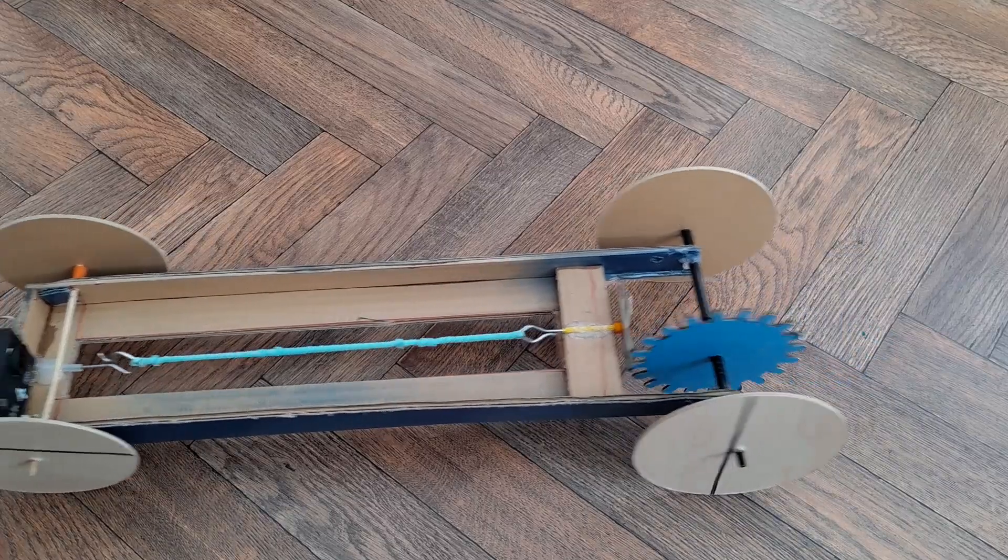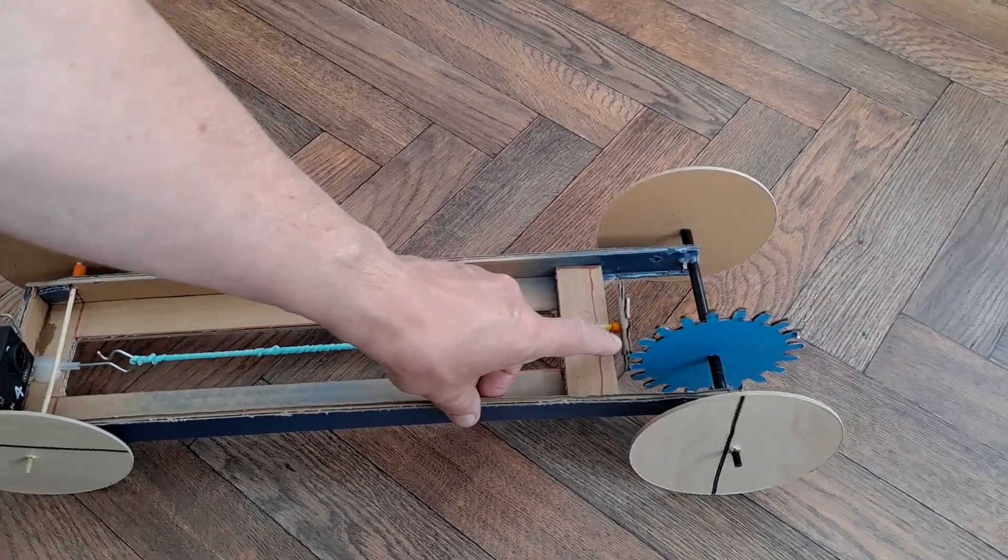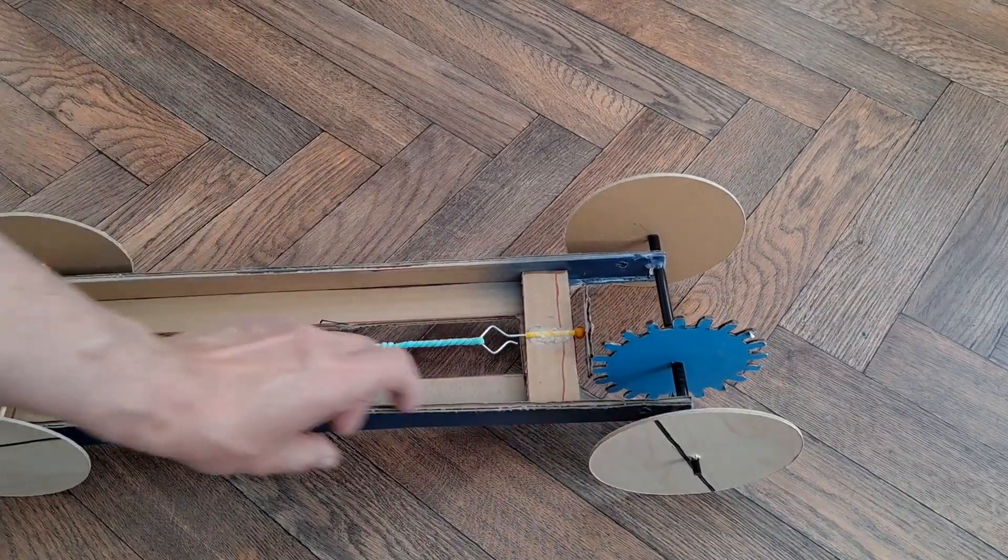And as you can see this one, we twist the rubber band, it turns that gear which turns that gear which turns the back wheels.